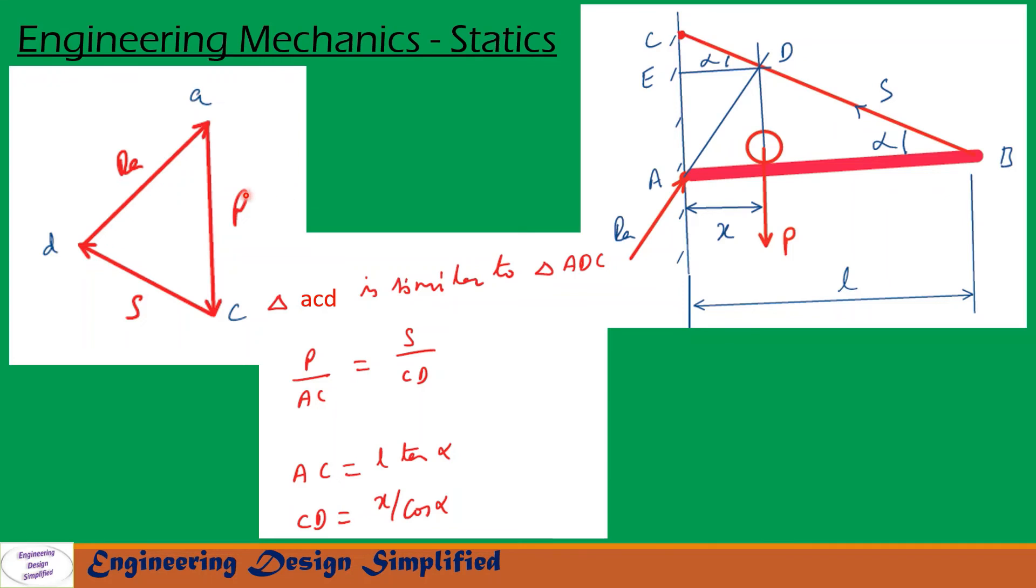So this distance by P by this distance equal to S by this distance. Now from this geometry, AC can be written as L tan alpha, where this is L and this is alpha.